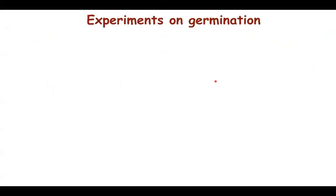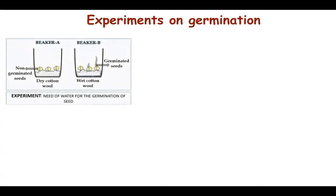There are certain experiments on germination. The first experiment demonstrates that a seed needs water for germination. Take two beakers: in one, place dry seeds on dry cotton wool. In the other, soak seeds overnight in water and place them on wet cotton wool. The seeds on dry cotton wool do not germinate, while the seeds on wet cotton wool germinate — proving that water is needed for germination.